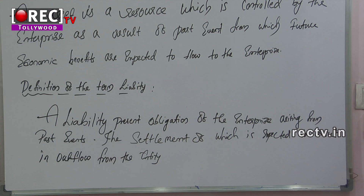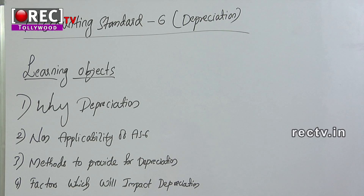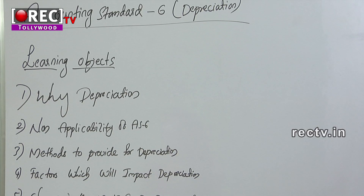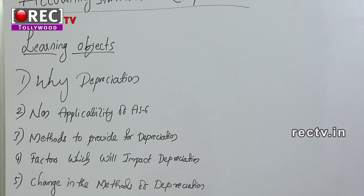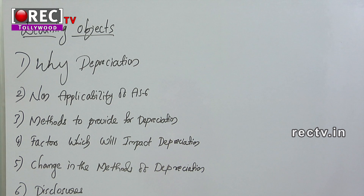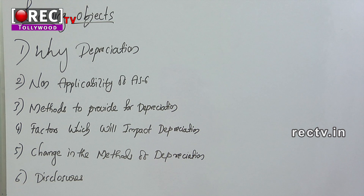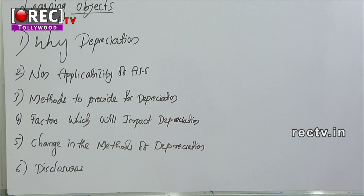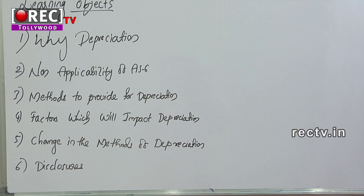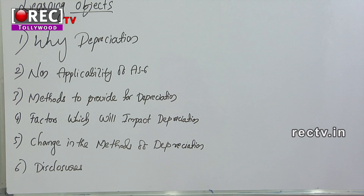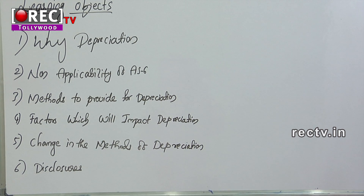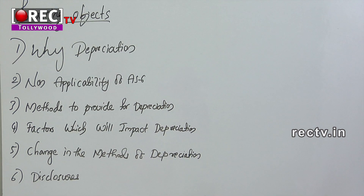Now let us look at Accounting Standard 6 — Depreciation. The learning objectives are: one, why we should provide depreciation; two, non-applicability of AS 6; three, methods to provide for depreciation; four, factors which will impact depreciation; five, change in the methods of depreciation; and lastly, disclosures.